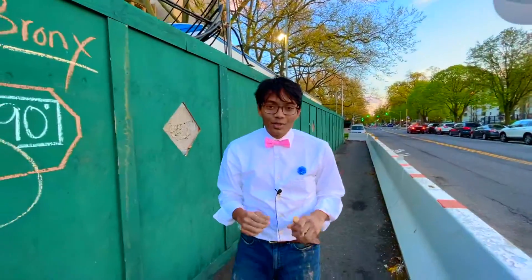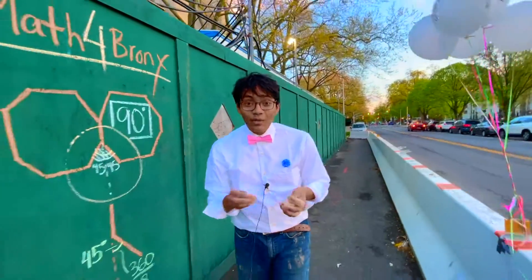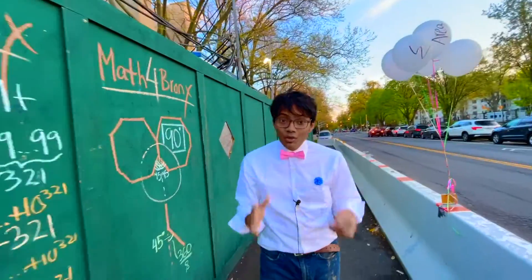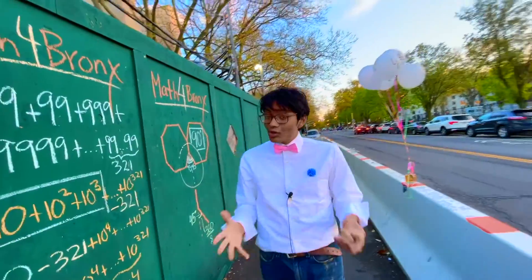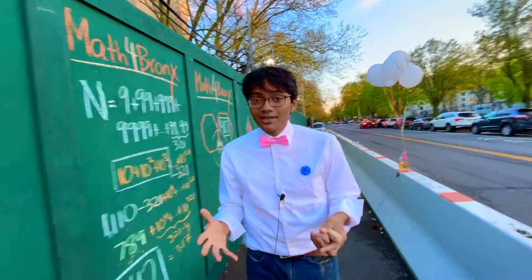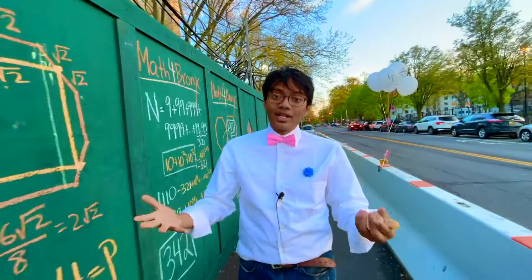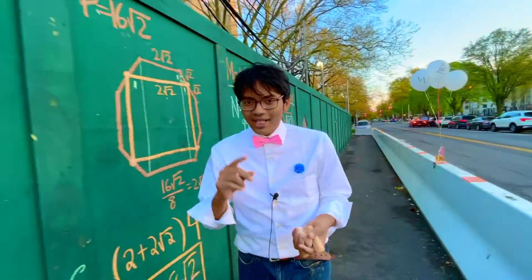Welcome back to the next episode of Master Bounce. Today, we're going to be talking about squares. Now, squares are unique because their sides are equal.